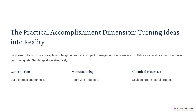Key areas of practical engineering include construction, where civil engineers build bridges, tunnels, and skyscrapers; manufacturing, where engineers optimize production processes for efficiency; and chemical processing, which involves scaling up lab research to produce useful products. Collaboration and effective management ensure that projects are completed successfully.